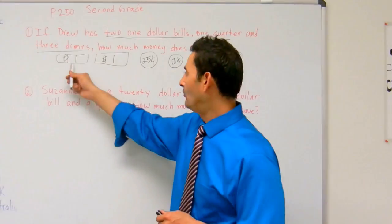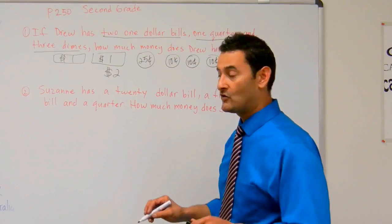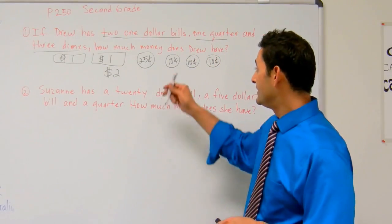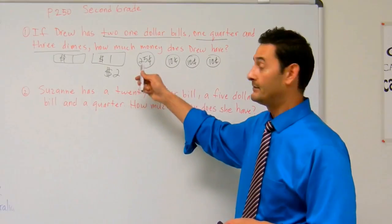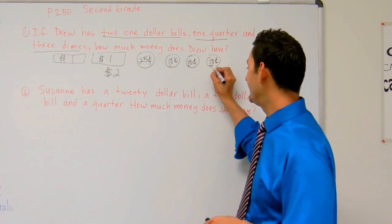Okay, so first let's start with the dollars. He's got one, two, he's got two dollars. Now let's do the coins. Twenty-five, let's use our knowledge of place value. Just pretend that these are bundles of ten and count up. Twenty-five, thirty-five, forty-five, fifty-five.